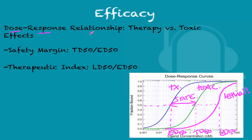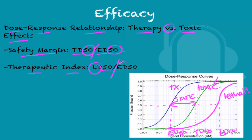The dose-response relationship also shows therapeutic versus toxic effects. The safety margin is the toxic dose at 50% divided by the effective dose at 50%. On this graph you can see the therapeutic dose curve, the toxic dose curve — meaning adverse side effects ranging from mild to severe — and the lethal dose curve, which means death. The therapeutic index is the lethal dose at 50% divided by the effective dose at 50%.